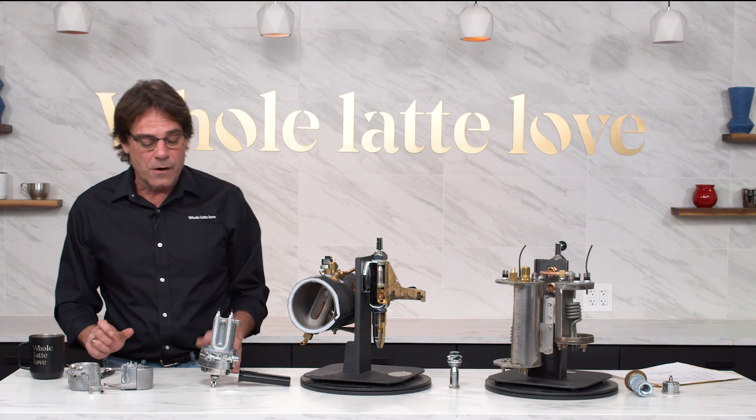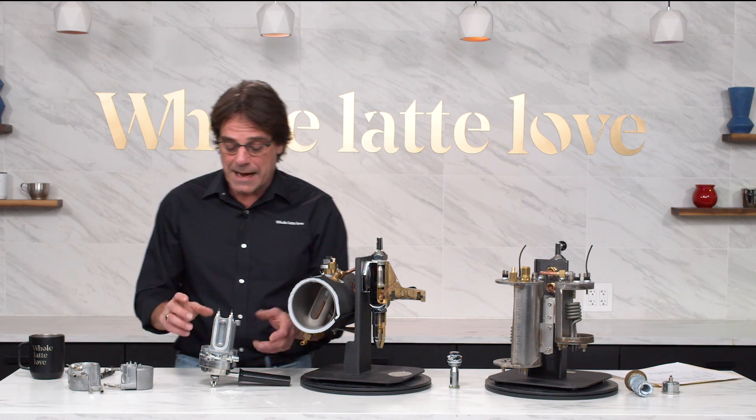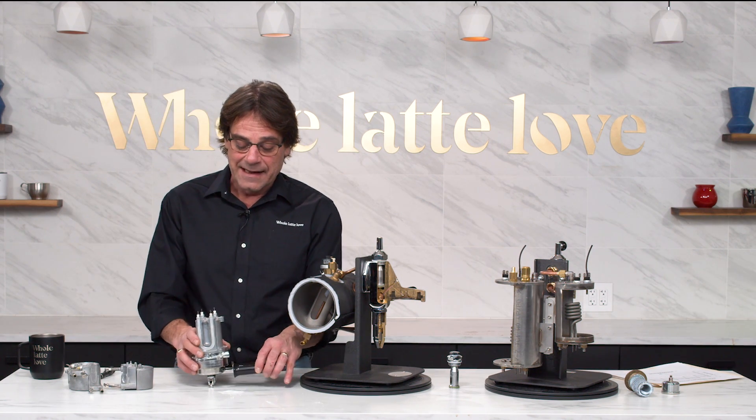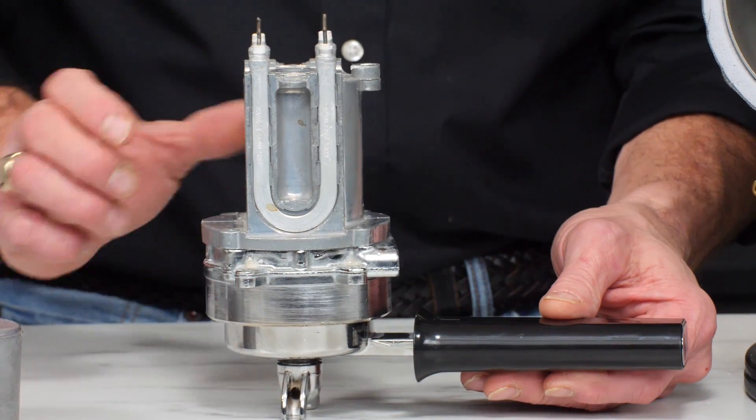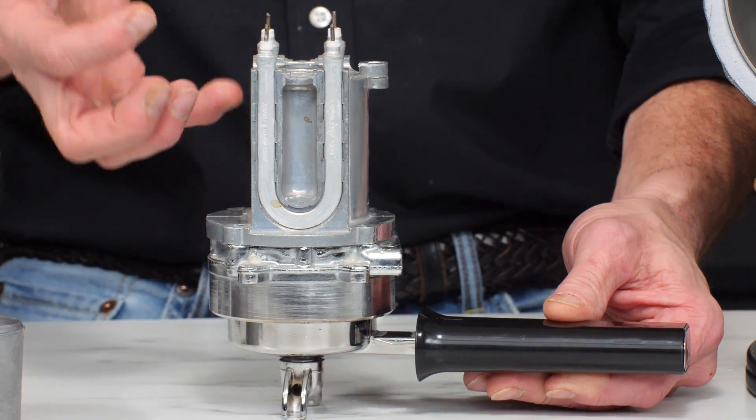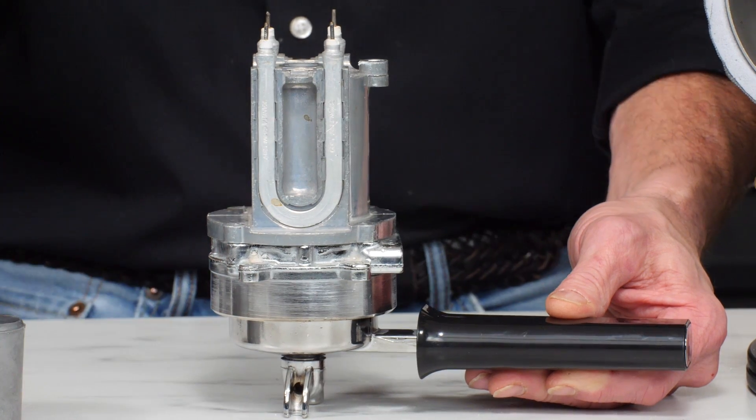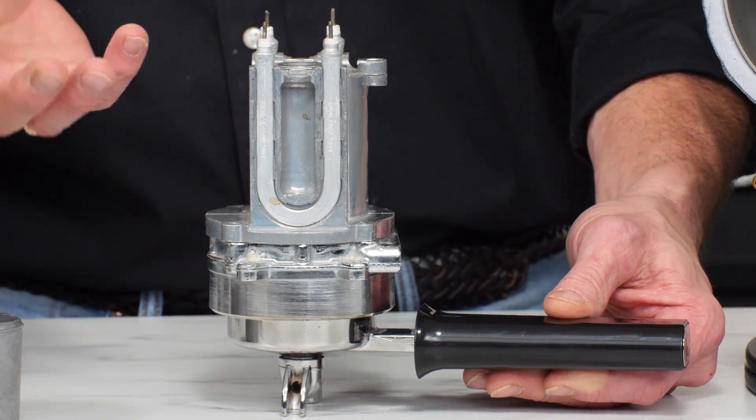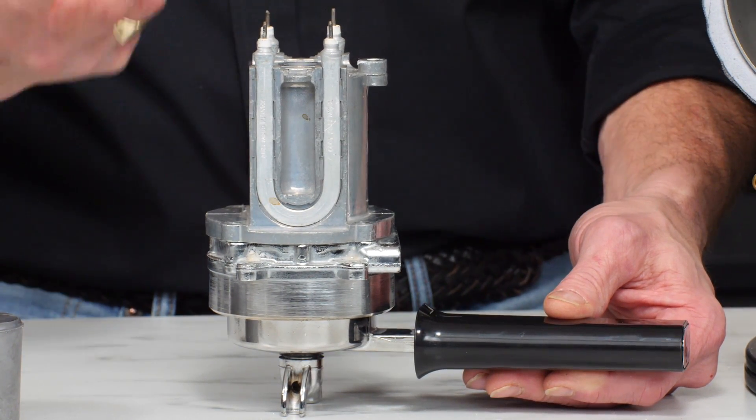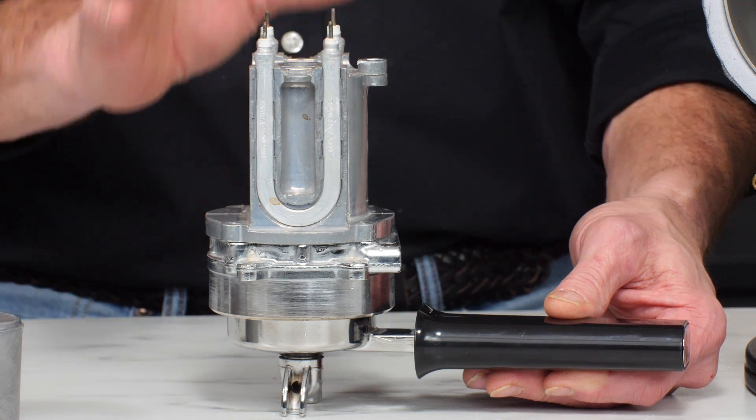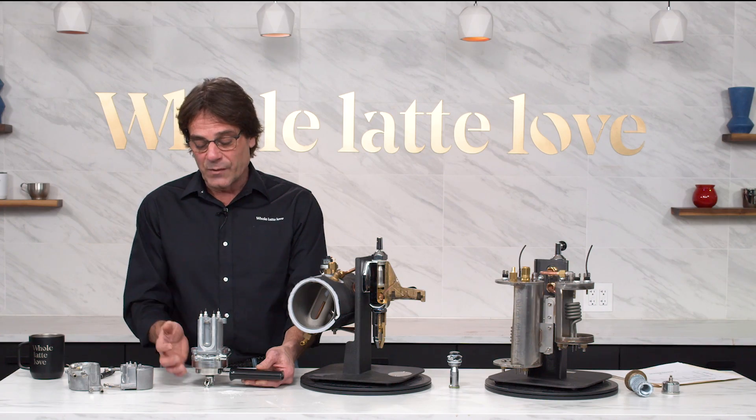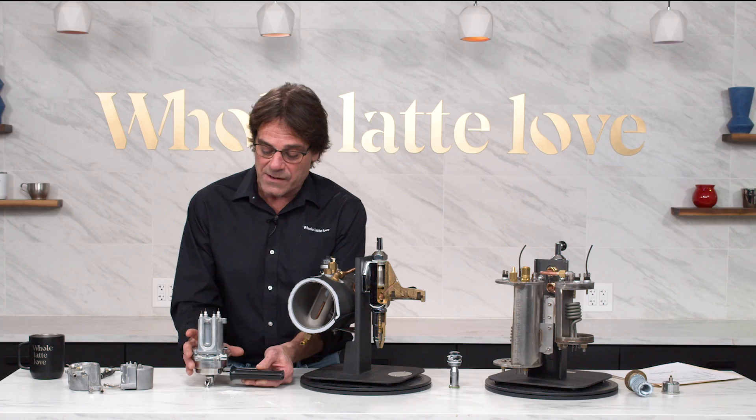Next up we're gonna go to a single boiler. This one happens to be out of a Gaggia Classic and I've got it set up like this so you can see how the portafilter is always sitting in contact with a lot of warm water. On a machine like a Gaggia Classic when not in use you want to keep your portafilter in the group so that the portafilter warms up as well.